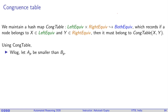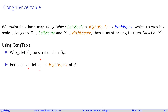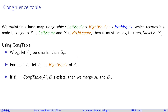Let's see how the congruence table helps merge Ai and Bj faster. Without loss of generality, assume |A| is smaller than |B|. We iterate over each Ai. Let R be the right-equi class where Ai lives. We check if there exists a both-equi class inside B, say Bj, such that Bj is the both-equi class between the right-equi class R and B. If that is the case, Bj must be merged with Ai.